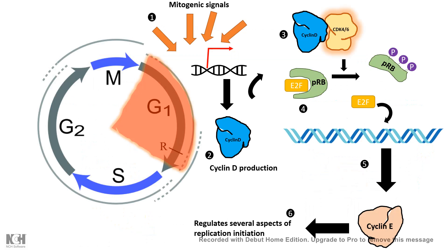At G1 phase, mitogenic signals come in and ultimately give rise to cyclin D production, so anything that prevents cyclin D activation would be called a tumor suppressor gene. pRb normally stops progression of the cell cycle from G1 to S by sequestering E2F. Cyclin D and CDK4 prevent that by phosphorylating pRb to free E2F, so pRb is an important tumor suppressor gene because when pRb is non-functional, growth and proliferation occurs.